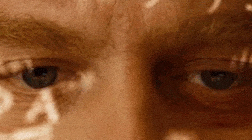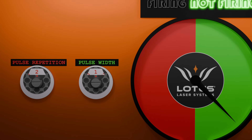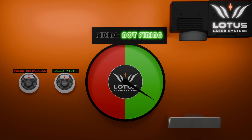Now listen, these numbers get into the thousandth or billionth of a second, so what we're going to do is scale everything way up just to make it a little bit easier to understand. So if I were to set my pulse repetition to two seconds and my pulse width to one, then the laser is going to fire for one second every two seconds. And this is a great way of controlling how much energy is going into the material, because every material is different.